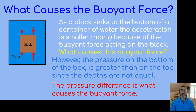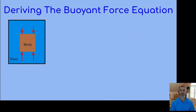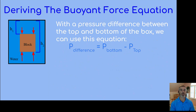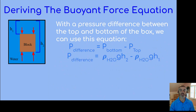With a pressure difference between the top and the bottom of the box, we can use this equation. The pressure difference is p-bottom minus the pressure on the top. The distance from the top of the fluid to the top of the box we'll call h1, and from the fluid to the bottom we'll call h2. We can substitute in the pressure equation for the fluid as density times g times height.